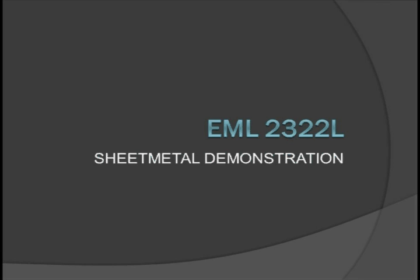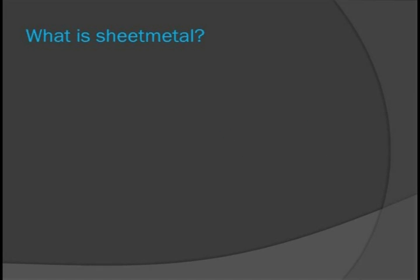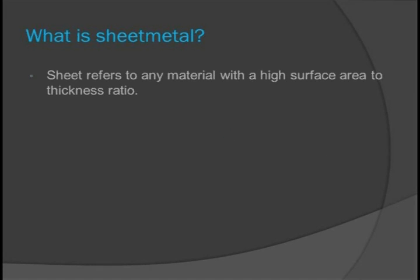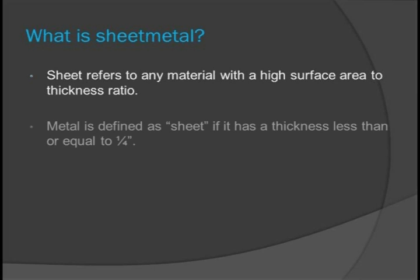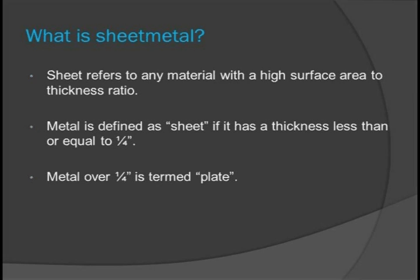This video covers basic sheet metal terminology and operations used for making parts in lab. Sheet metal refers to a piece of material possessing a high surface area to thickness ratio. A piece of material is defined as sheet if it has a thickness of one quarter inch or less. If the material is thicker than one quarter inch, it is termed plate.